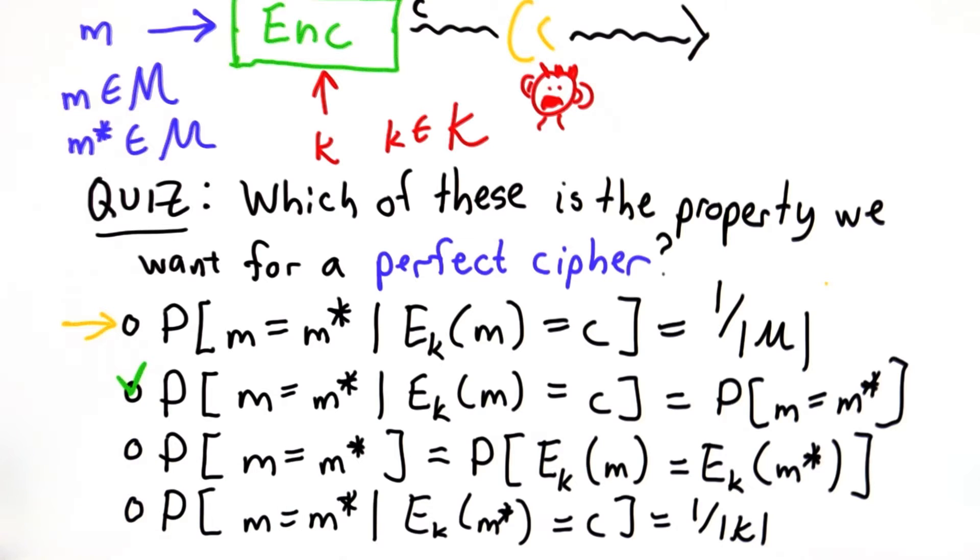The attacker knows that while the message is likely to be a valid sentence in English, very few possible bit sequences correspond to that, so all messages are not equally likely.